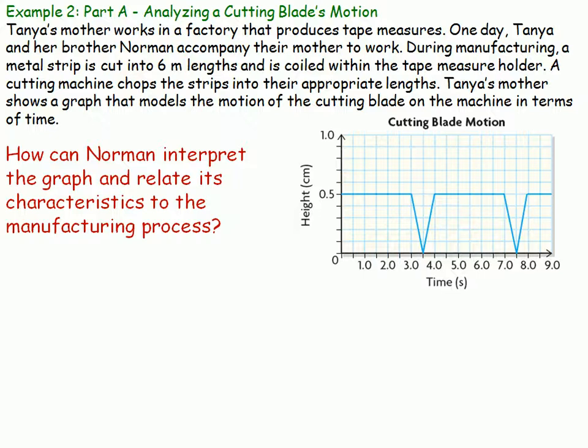In this example, and we'll continue some of it on the next page as well, we're analyzing a cutting blade's motion. This is also a periodic graph. Tanya's mother works in a factory that produces tape measures. One day, the mother takes Tanya and her brother Norman to accompany their mother to work. During manufacturing, a metal strip is cut into six-meter lengths and is coiled within a tape measure holder. Tanya's mother shows a graph that models the motion of the cutting blade on the machine in terms of time. We're asked how can Norman interpret the graph and relate its characteristics to the manufacturing process.